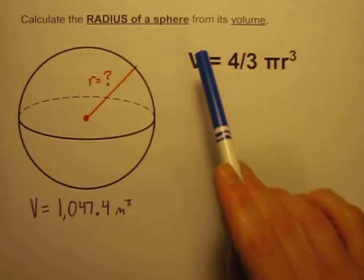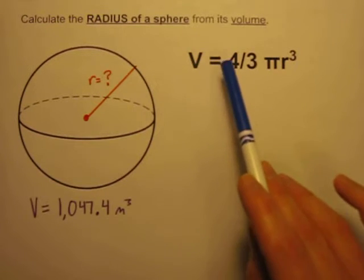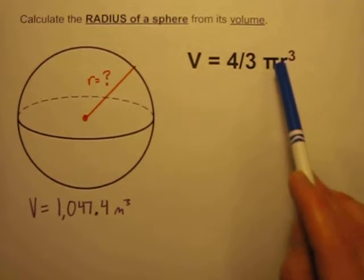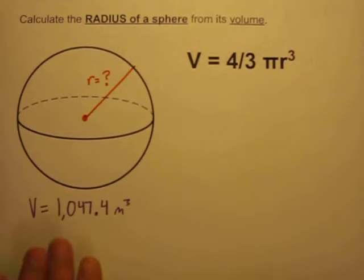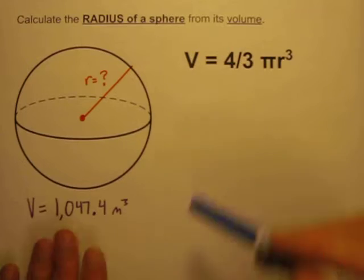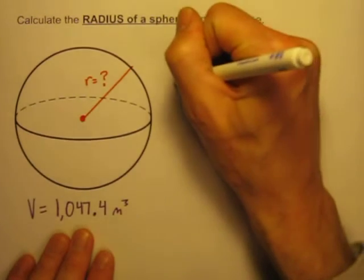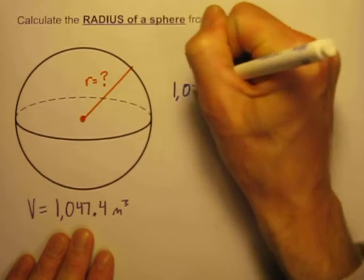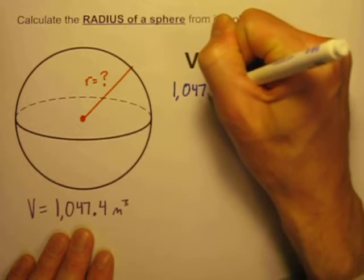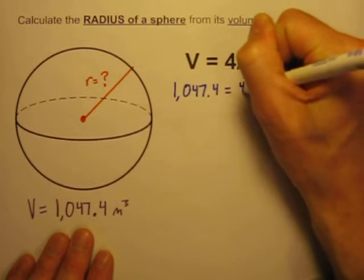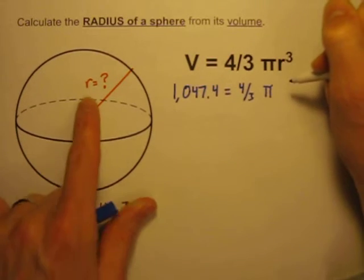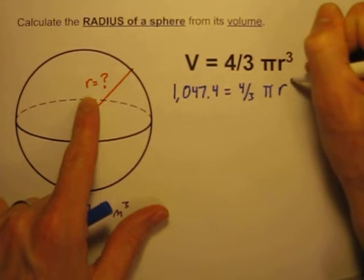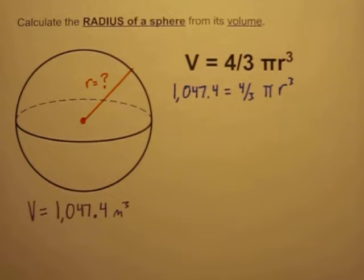First we start with the formula for the volume of a sphere. The volume is equal to 4/3 times π times the radius cubed, radius to the third power. And let's take the volume that we're given and put it into the formula. So the volume 1,047.4 is equal to 4/3 times π, and the radius I don't know, so I have to leave that as r for now, radius to the third power.